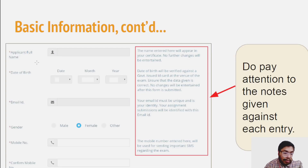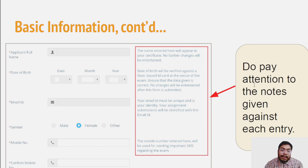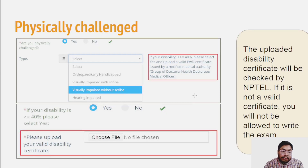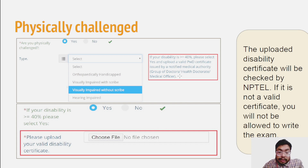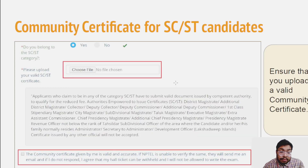In the personal details section, fill your name, date of birth, email ID, gender, and mobile number. If you are physically challenged, you have to upload your disability certificate. You can also upload a valid SC/ST certificate, as there may be some relaxation for those candidates.